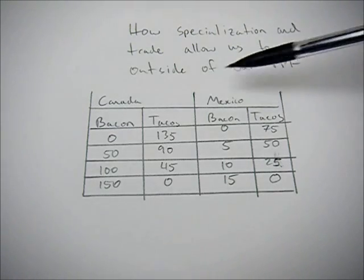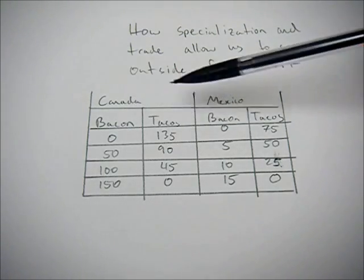So here we're looking at Canada and Mexico as an example, and they can produce bacon or tacos.